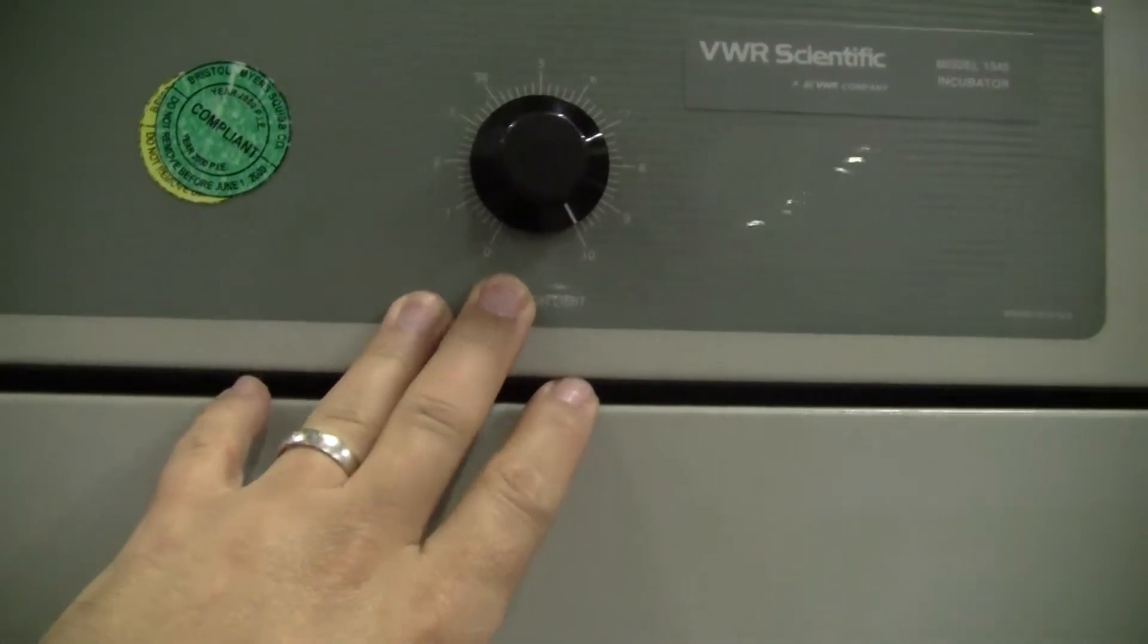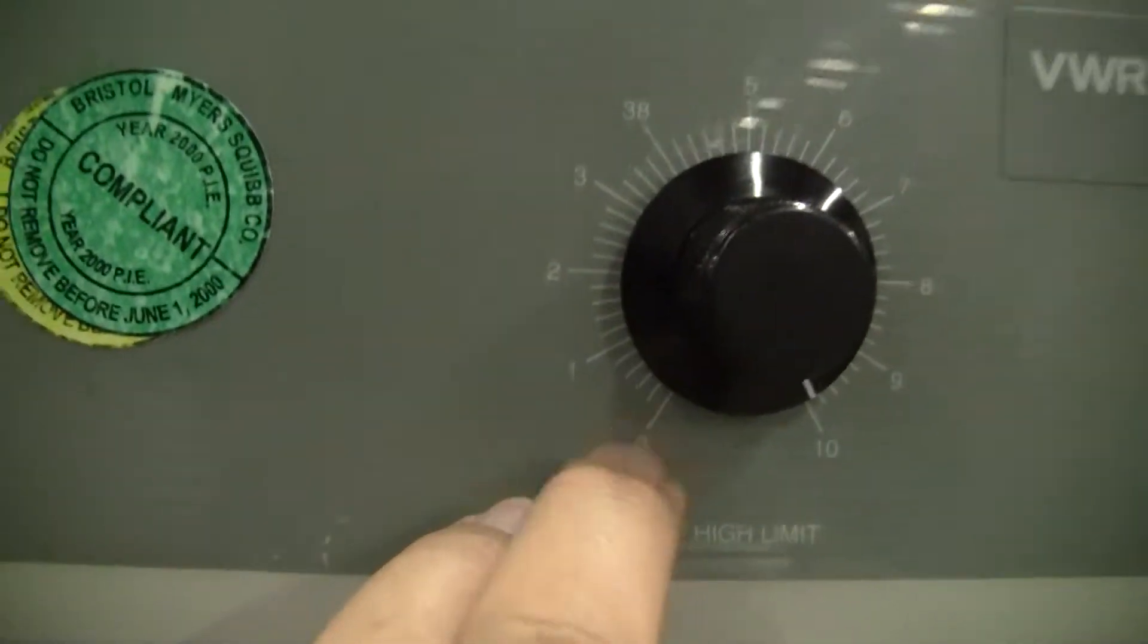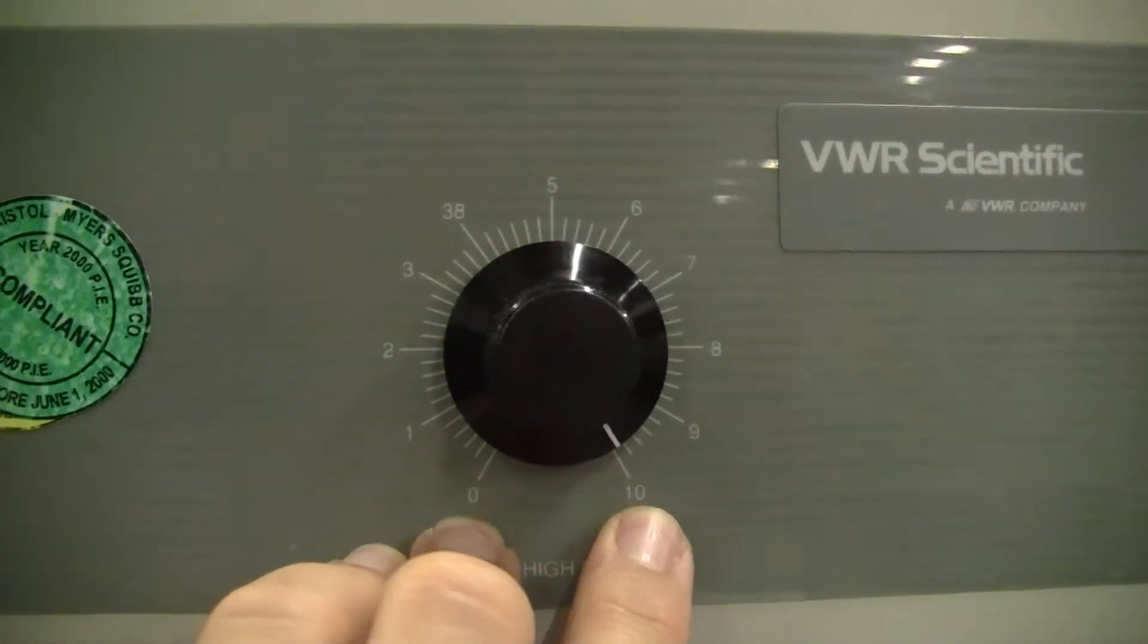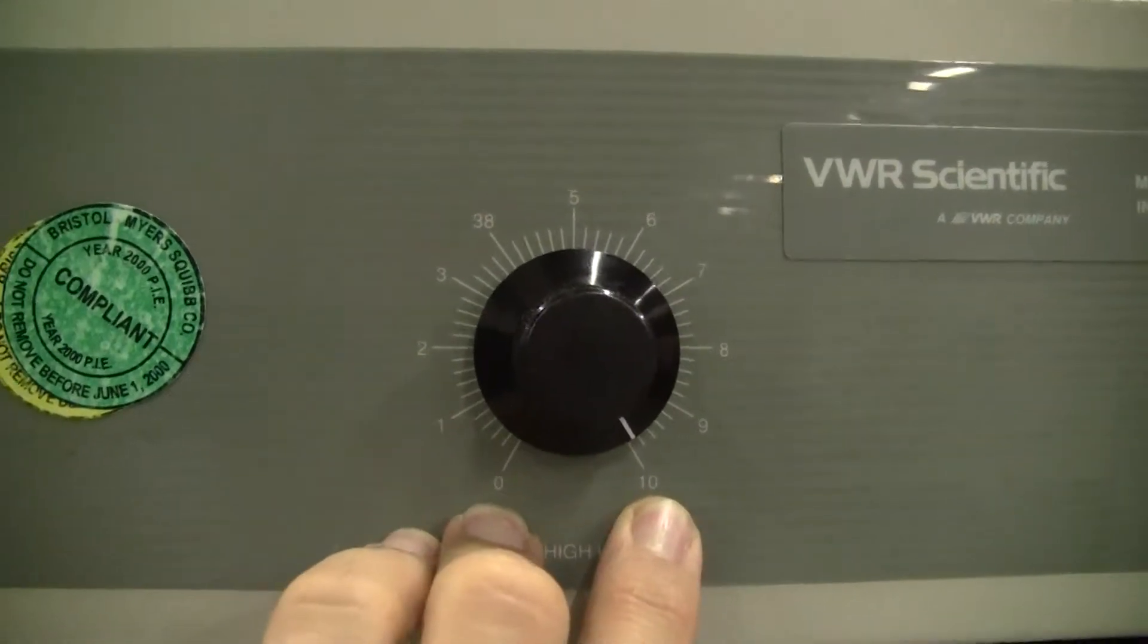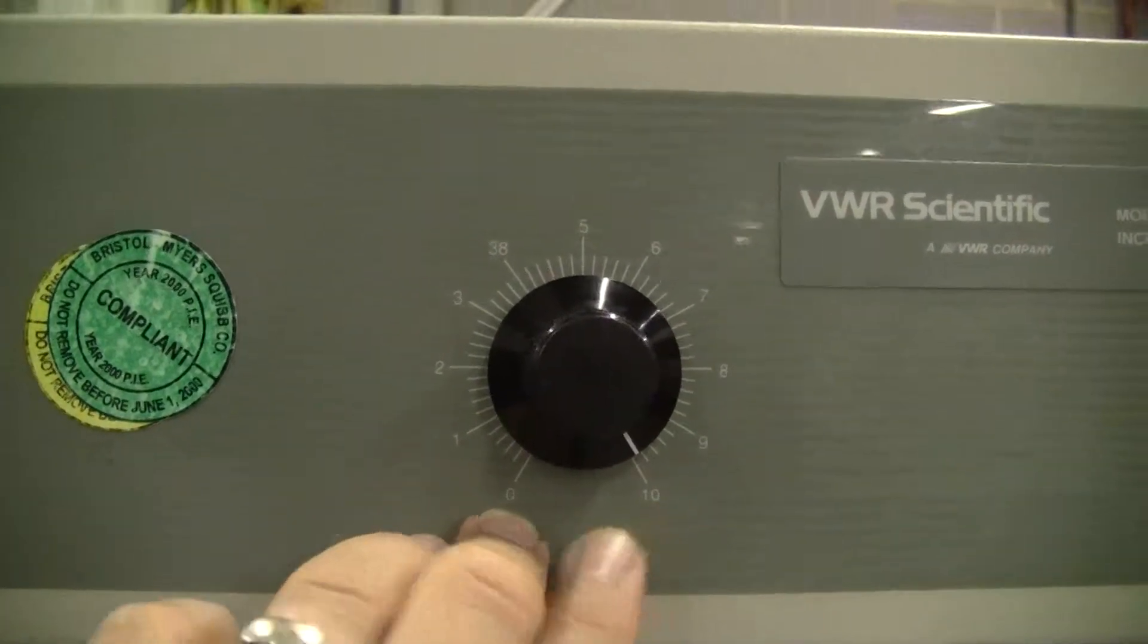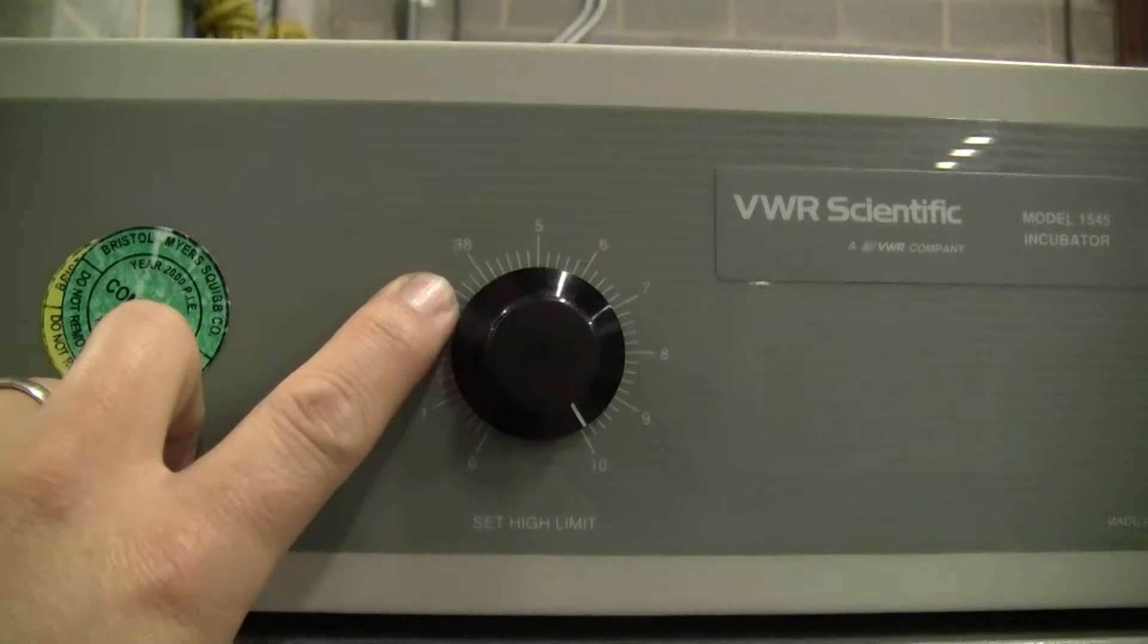A key note on the over temp is that the dial goes from 0 to 10. It's a percentage controller. It does not indicate any kind of temperature. Ignore the 38, it's meaningless.